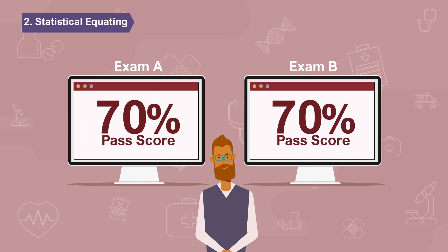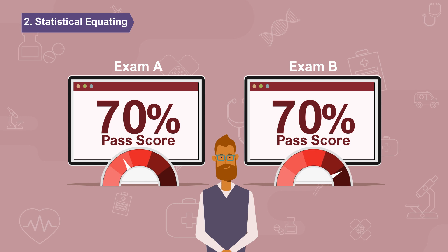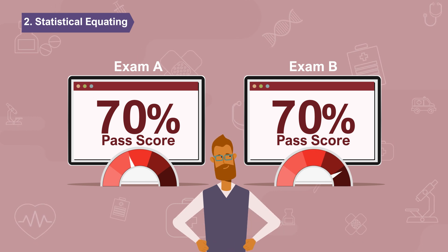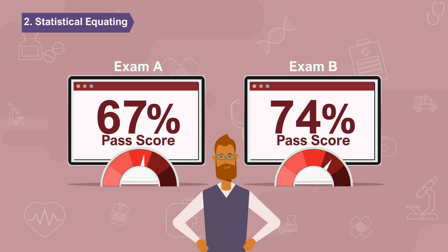With statistical equating, psychometricians, who are COPPER's contracted testing experts, make judgments about the change of difficulty between two different exams and adjust the examination score accordingly.